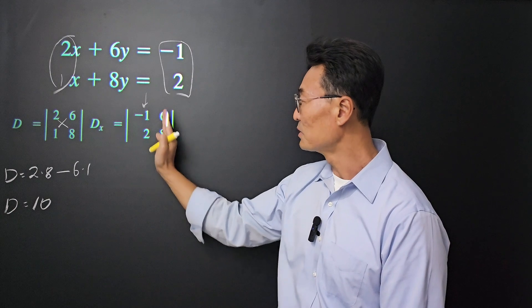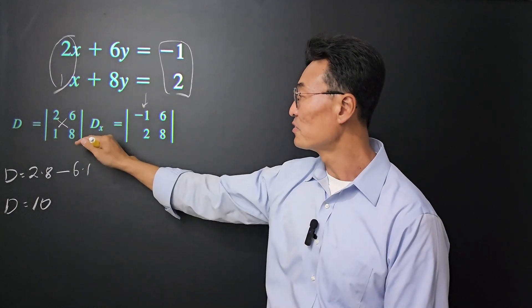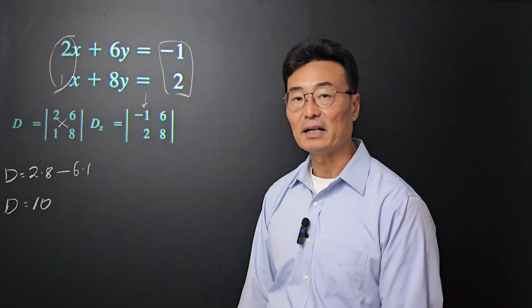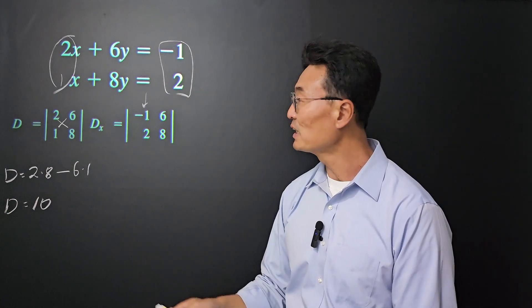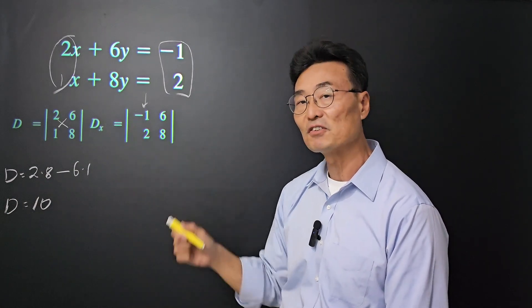Notice the second column, the 6 and the 8, we leave it alone since we're looking for Dx. To find Dx, we're finding the determinant of this matrix.